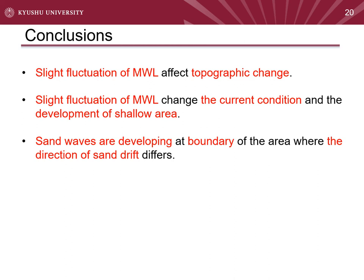In conclusion, we clarify the following in this study. Fluctuation of mean water level affects topographic change, and slight fluctuation of mean water level changes the current conditions and the development of shallow areas. Finally, sand waves are developing at the boundary of the area where the direction of sand drift differs. Thank you for listening.